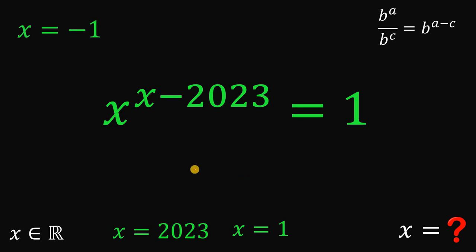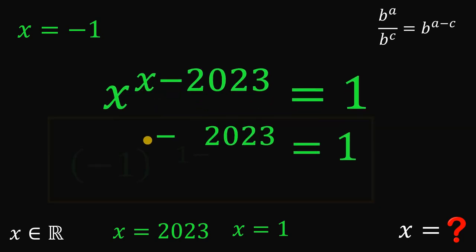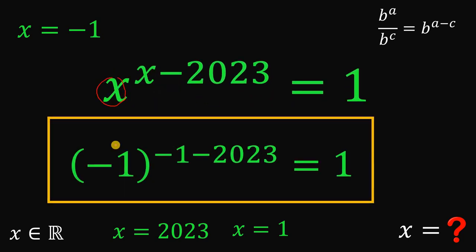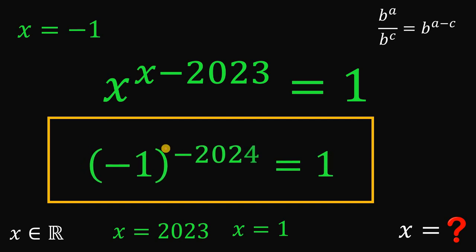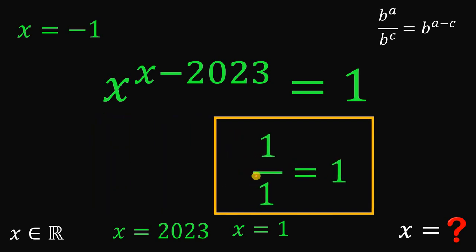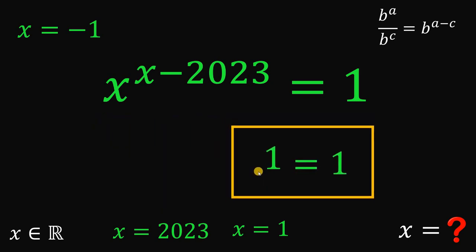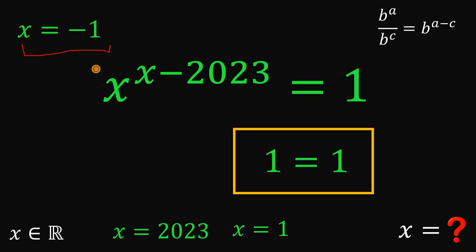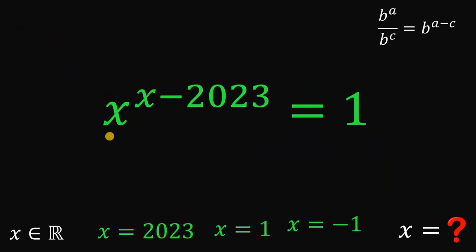Now let's try x equals negative 1. Replacing all x with negative 1: we get negative 1 raised to the power of negative 1 minus 2023, which gives us negative 2024. Taking the reciprocal, the left-hand side becomes 1 over negative 1 raised to the power of 2024. Since negative 1 raised to an even exponent becomes positive 1, the left-hand side is just 1 over 1, which equals 1. Therefore x equals negative 1 is also a solution.